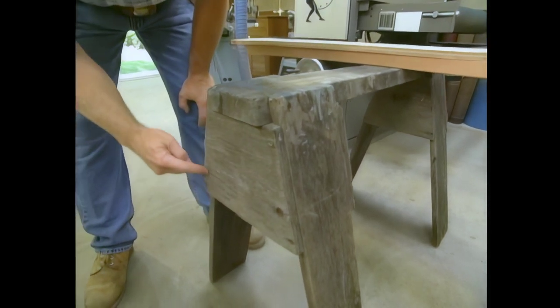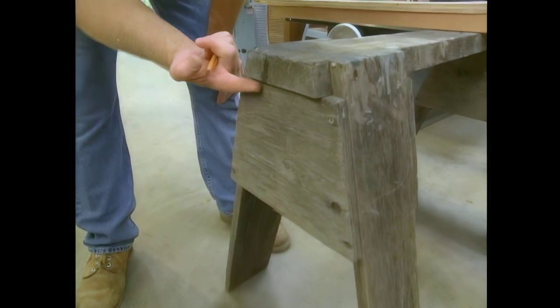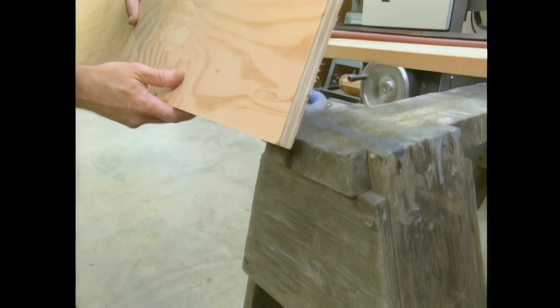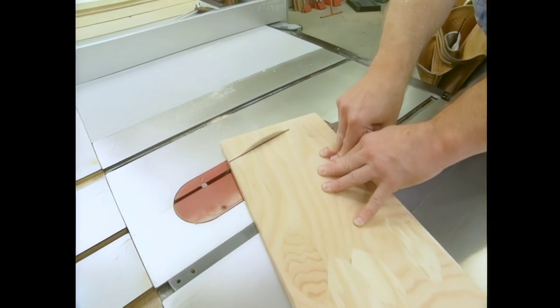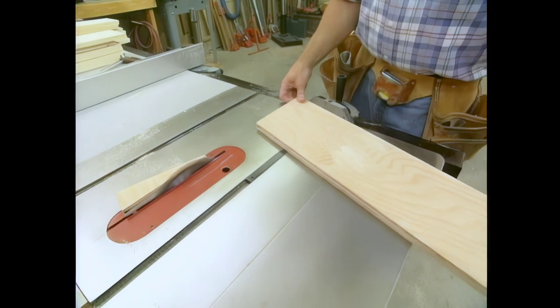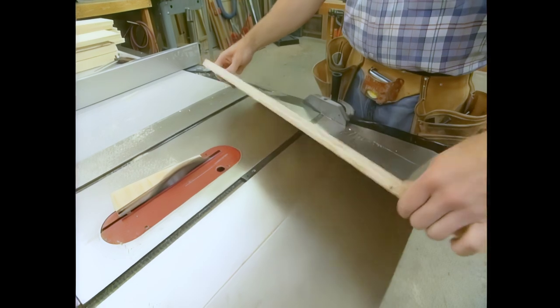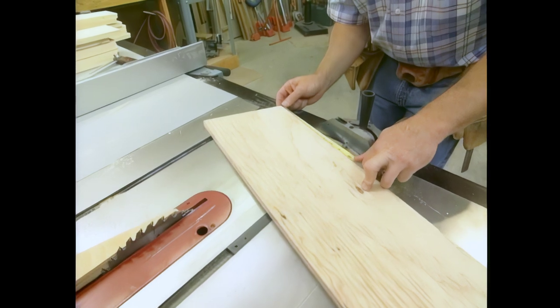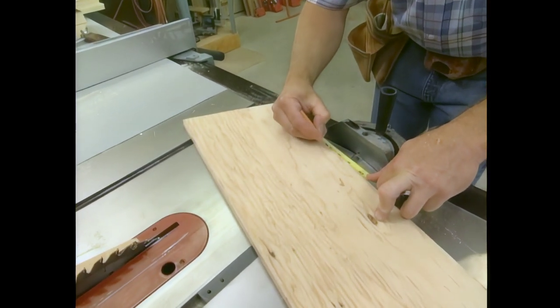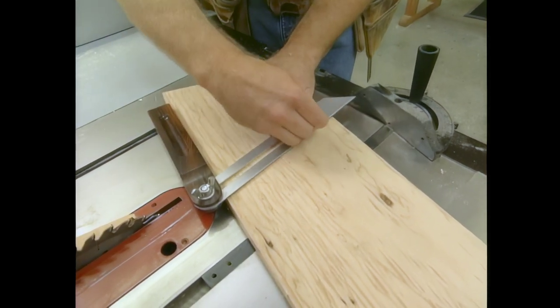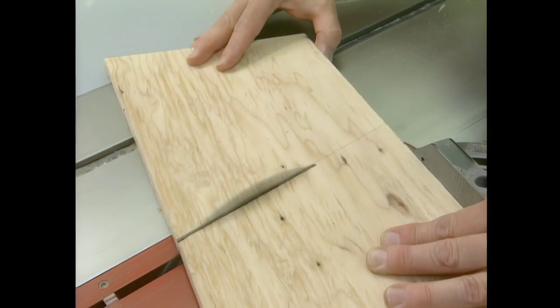Next, I want to make these gussets. They not only provide support for the top piece, but they tie the legs together. So I've taken a piece of three-quarter inch plywood and ripped it to eight inches wide. Over the table saw, I've now set my bevel gauge at 15 degrees and I'll make the first cut. With that cut made, I can flip the piece over so that I'll get the opposite bevel, measure along the top edge seven inches, take my bevel gauge, which I've also set at 15 degrees, transfer a mark to the front edge and make the next cut.